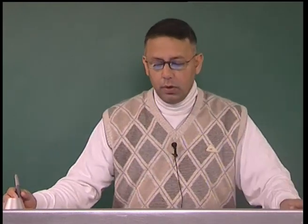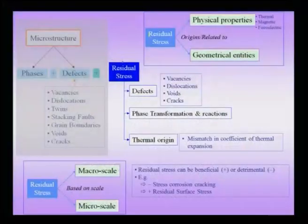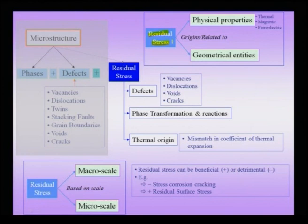The origin of residual stresses, if you look at the slide at the top right hand side, can arise from various physical properties like thermal origin, magnetic origin — it could be ferroelectric, ferromagnetic, etcetera. It could also arise from geometrical entities, examples of some of which we have already seen. Traditionally, residual stress has been classified based on the scale at which it exists — typically as the macro scale and the micro scale.